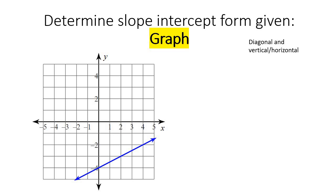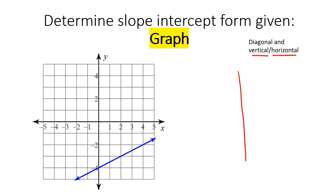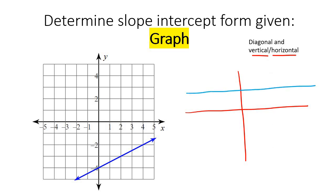In this lesson, we are going to learn how to find the slope-intercept form when we are given the graph. I'm going to do quite a lot of examples, and I'm going to show you how to find the equation when it's a diagonal line like this, but I'm also going to show you vertical and horizontal lines — maybe your teacher gave you a line that went vertical or horizontal. I'll also be showing that in this lesson.